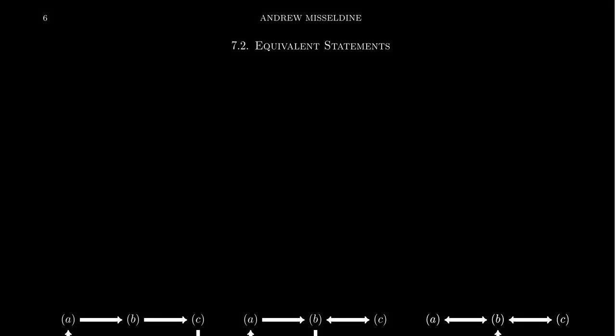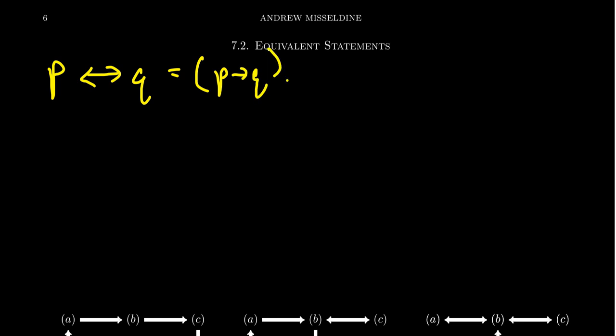In several previous videos in this lecture series, we've talked about how one can prove a conditional statement P implies Q. And in lecture 24, we actually talked specifically about biconditional statements — how do you prove that P is equivalent to Q? P is equivalent to Q is the same thing as P implies Q and Q implies P. So every biconditional statement has the proving cost of two conditional statements.